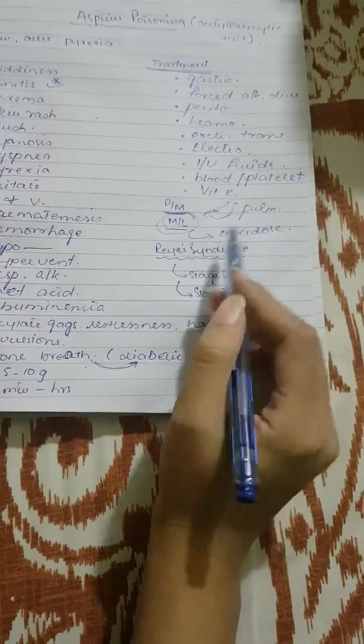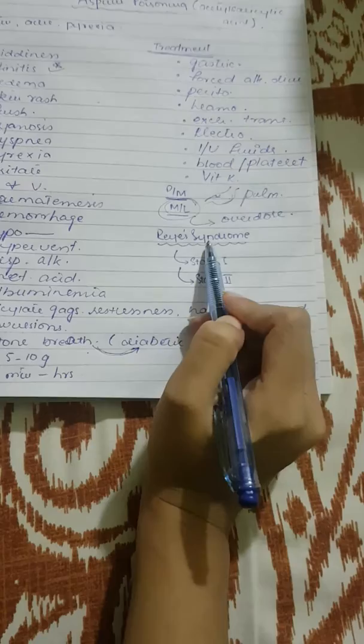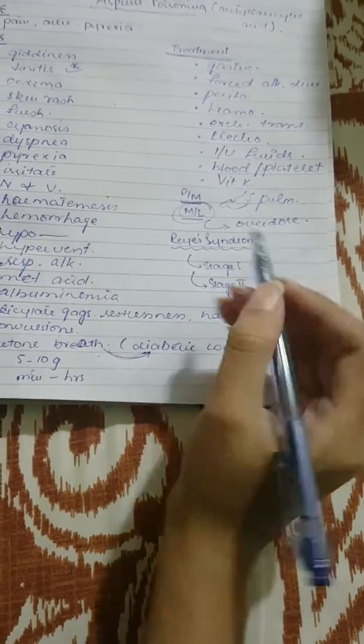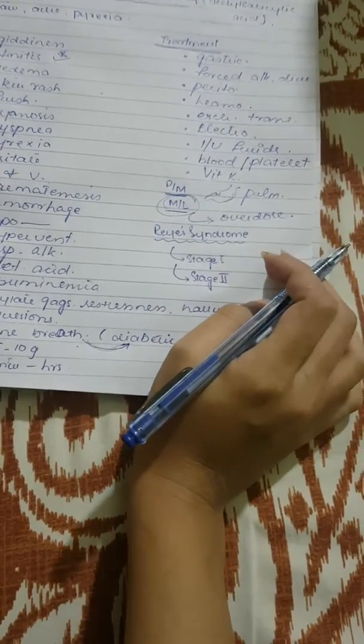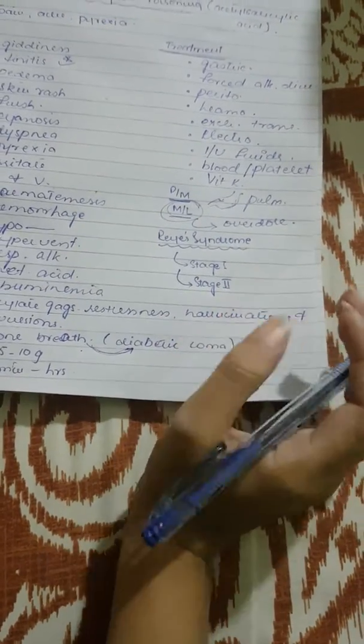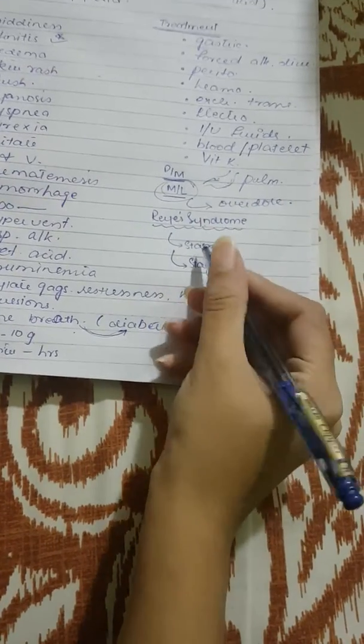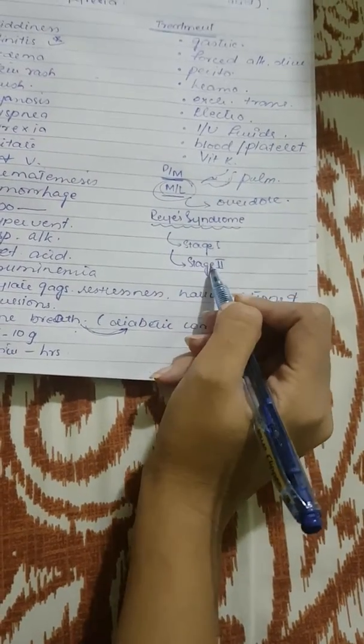Then the most important thing we need to know in aspirin poisoning is Rye syndrome. Rye syndrome is when you take aspirin mostly in children. You take aspirin during a viral infection, mostly influenza or chickenpox. It is comprised of two stages, stage 1 and 2.